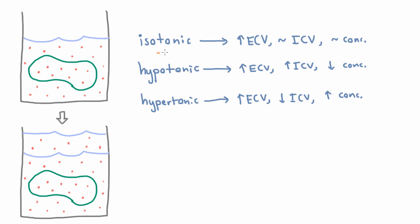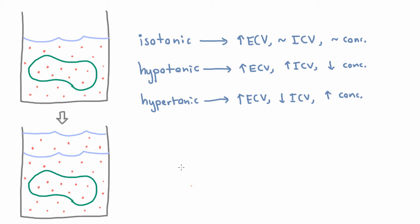Every single one of these is going to increase your extracellular volume, because when you add that fluid, it goes straight into the extracellular volume. But if you add 1 liter of isotonic, 1 liter of hypotonic, and 1 liter of hypertonic, which one is going to increase your extracellular volume the most? The answer is the hypertonic fluid, because you're adding a liter of fluid but also adding a bunch of salt, and that salt is going to drag more fluid out of the cells — so you're giving not just the liter, but the liter plus whatever it's going to steal from the cells.